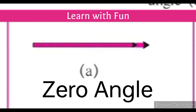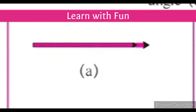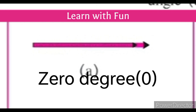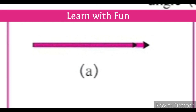The first type is zero angle. On screen, one diagram is present — that diagram is called a zero angle. An angle whose measure is zero degree is called a zero angle. Here, the two arms of the angle coincide with each other. Both the arms are on a straight line only; they coincide with each other. So, this angle is called a zero angle.